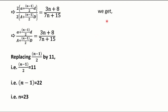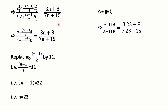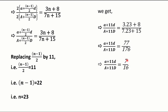Now we get A + 11D in the numerator and capital A + 11 capital D in the denominator. On the right-hand side, n is replaced by 23. So we substitute n = 23 into (3n + 8) over (7n + 15). The numerator becomes 3(23) + 8 = 77, and the denominator becomes 7(23) + 15 = 176. We can cancel the common factor of 11, giving us 7 over 16.